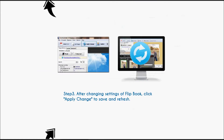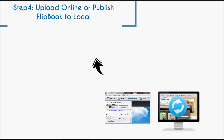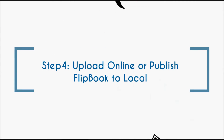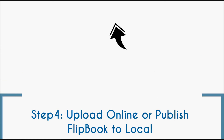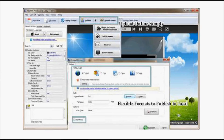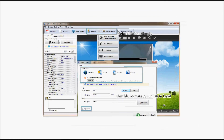Step 3: Click Apply Change to save the change and refresh the flip book. Step 4: Select a way to publish the flip book. You can choose to upload online simply, or publish to local with the proper format.